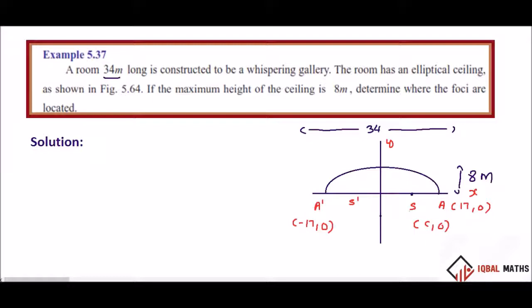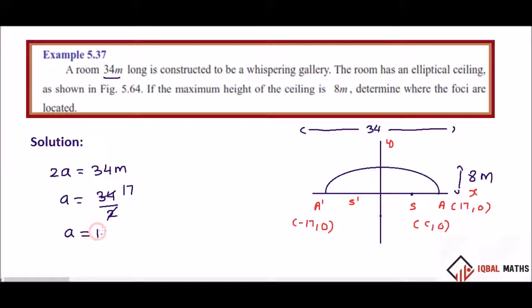First, we find the length of the major axis. The length of the major axis is 2a, and 2a is equal to 34 meters. Then a is equal to 34 divided by 2, so a is equal to 17 meters.